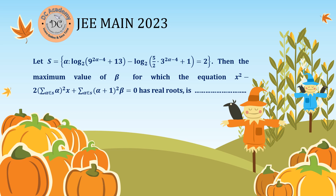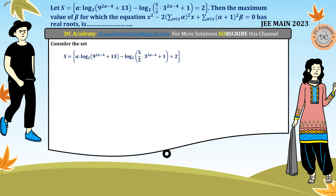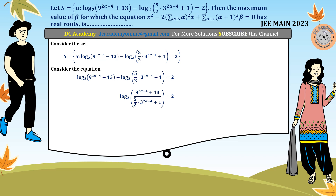Let's go ahead and solve this in the solution section. We consider the logarithmic equation and recall the key property: log a minus log b equals log of a by b. Applying this, we get log of 9 to the power (2α minus 4) plus 13 divided by the remaining term. Applying the definition of logarithm, the expression inside the bracket equals 2 to the power 2, which is 4. This gives us a simple equation without any logarithmic terms.